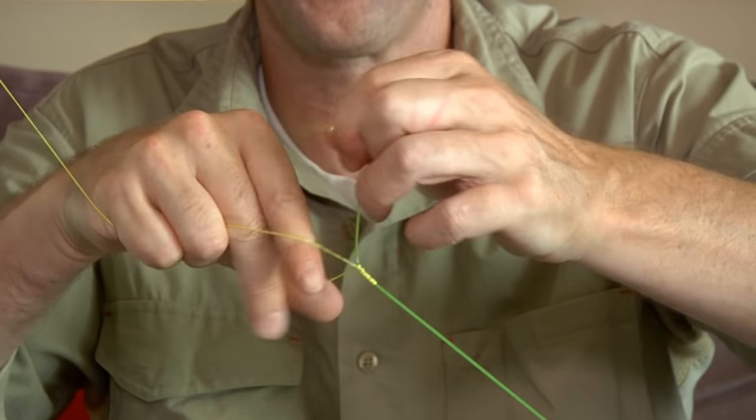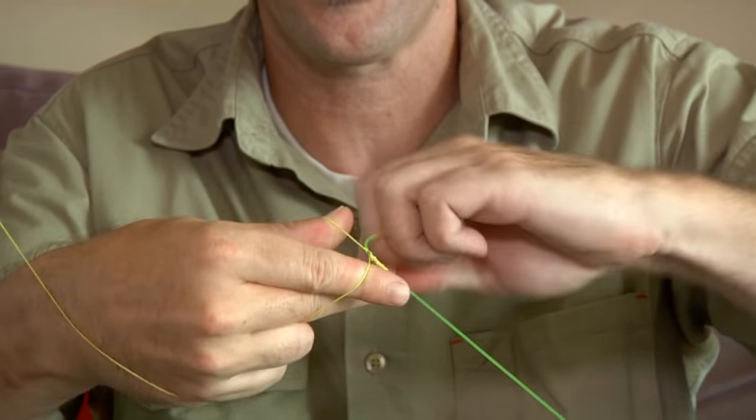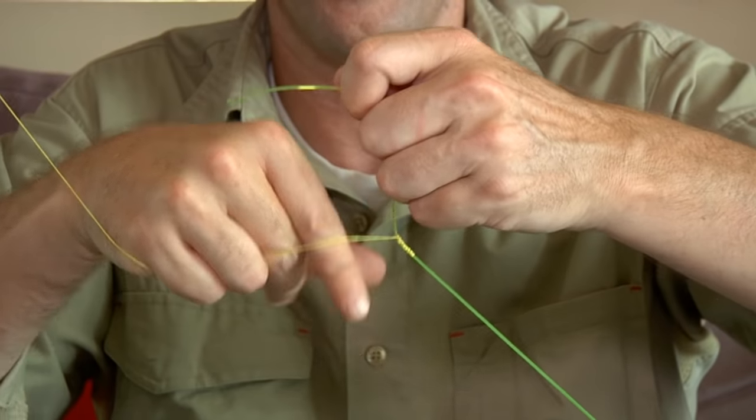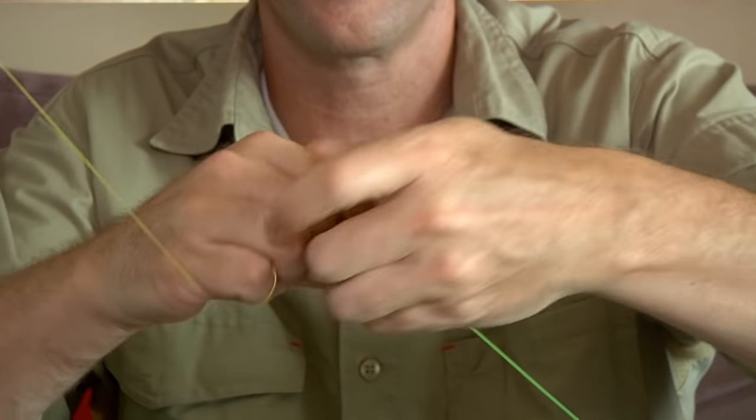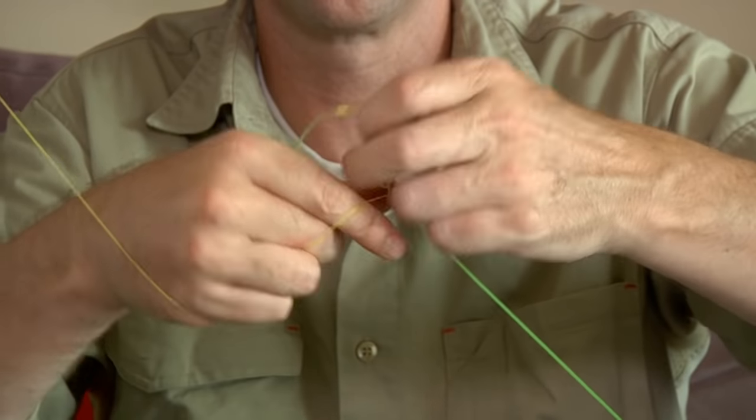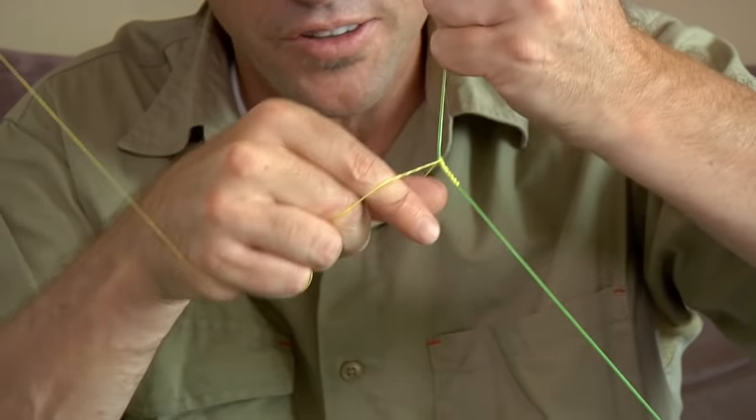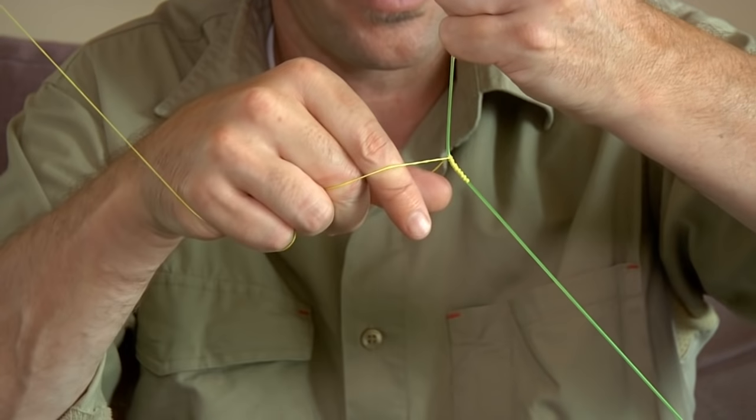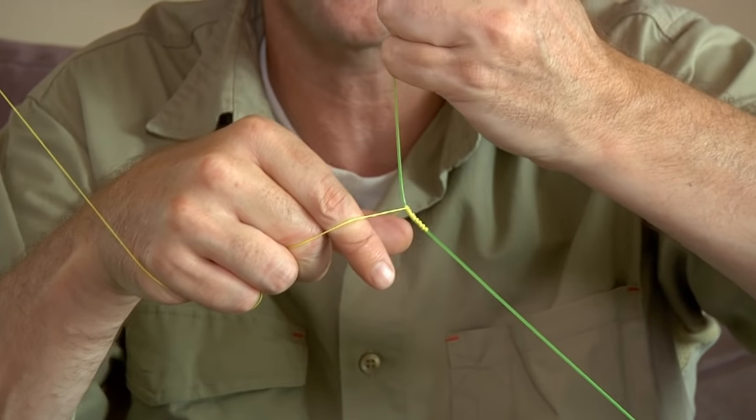And we'll go five again. There we go. Compress it down. And another five. There you go. Done. So that's basically the FG that's sitting on that leader. Right there. Easy as that.